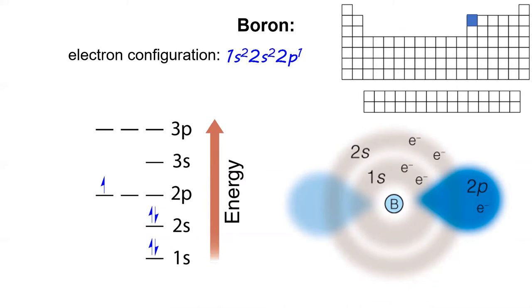The fifth element is boron, and the fifth electron is placed in the next vacant subshell, the 2p. This is the first element with an electron in a p orbital, shown in blue on the diagram. The electron configuration for boron is 1s² 2s² 2p¹.